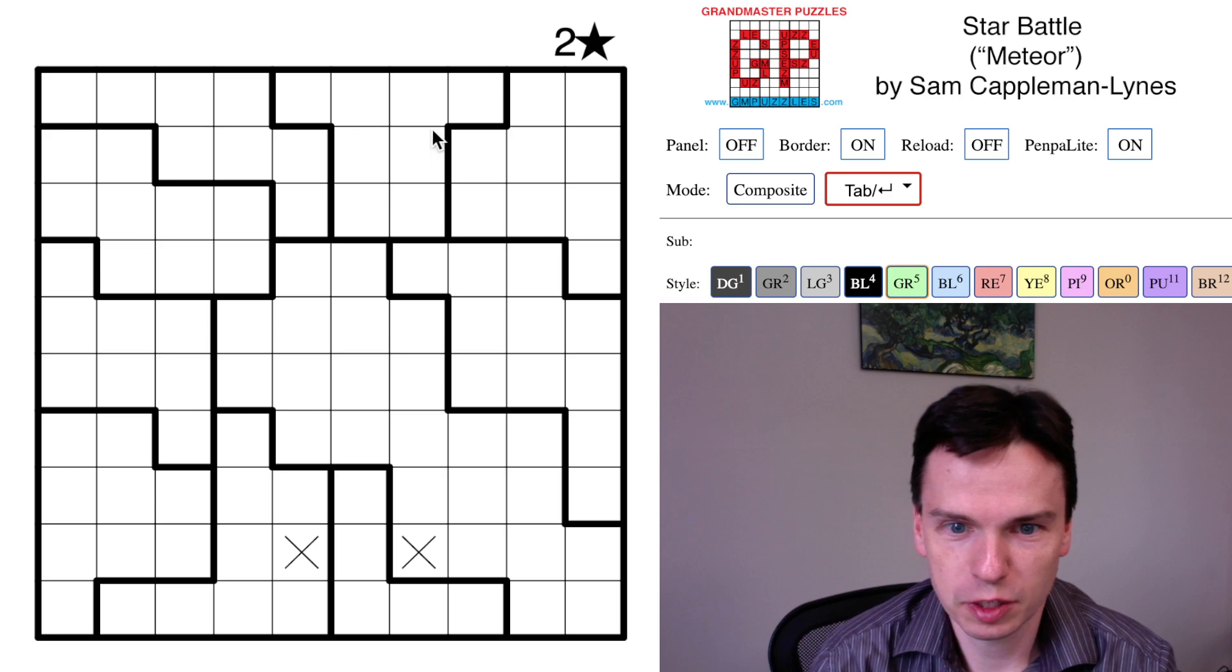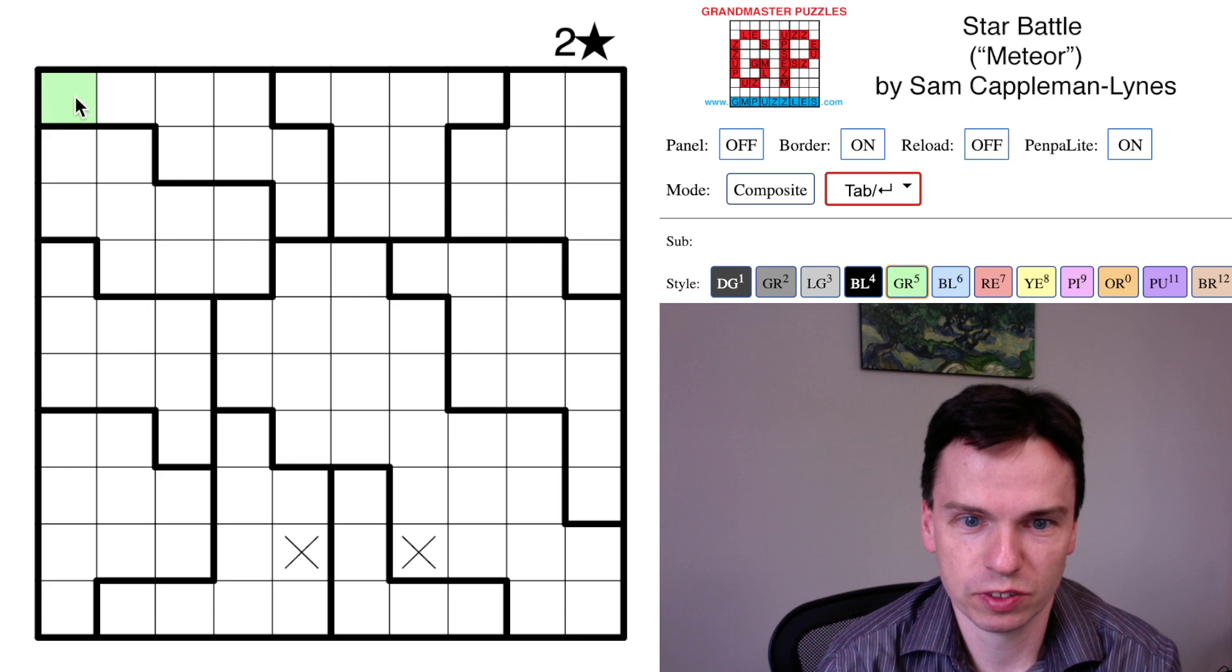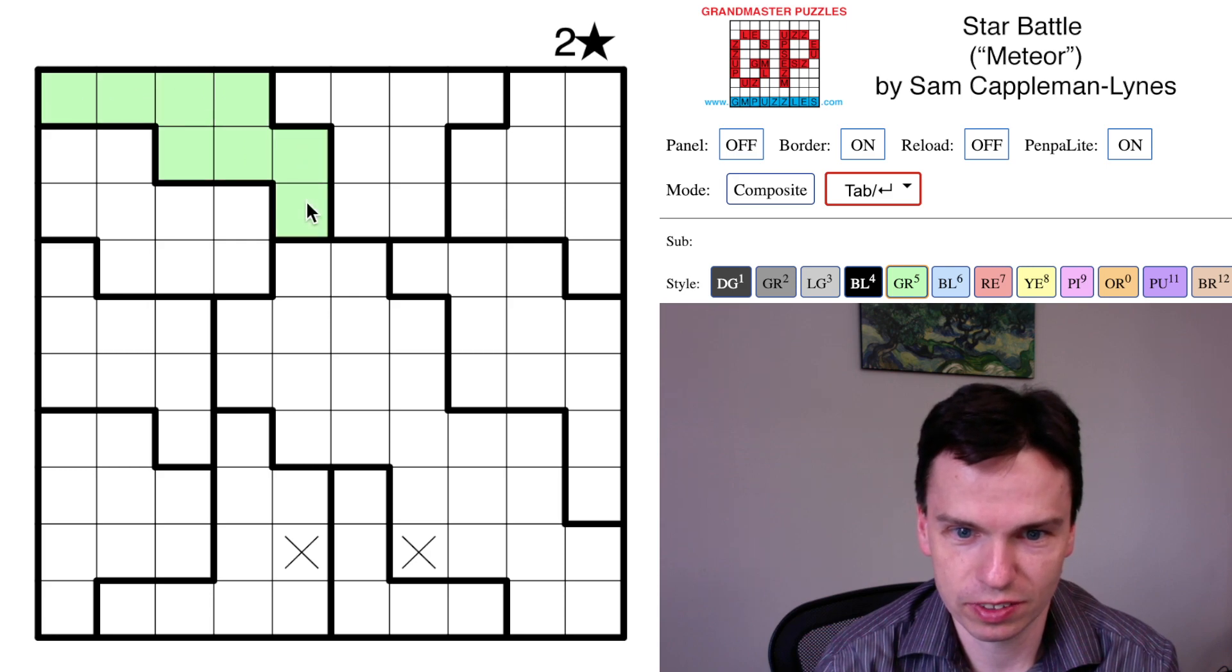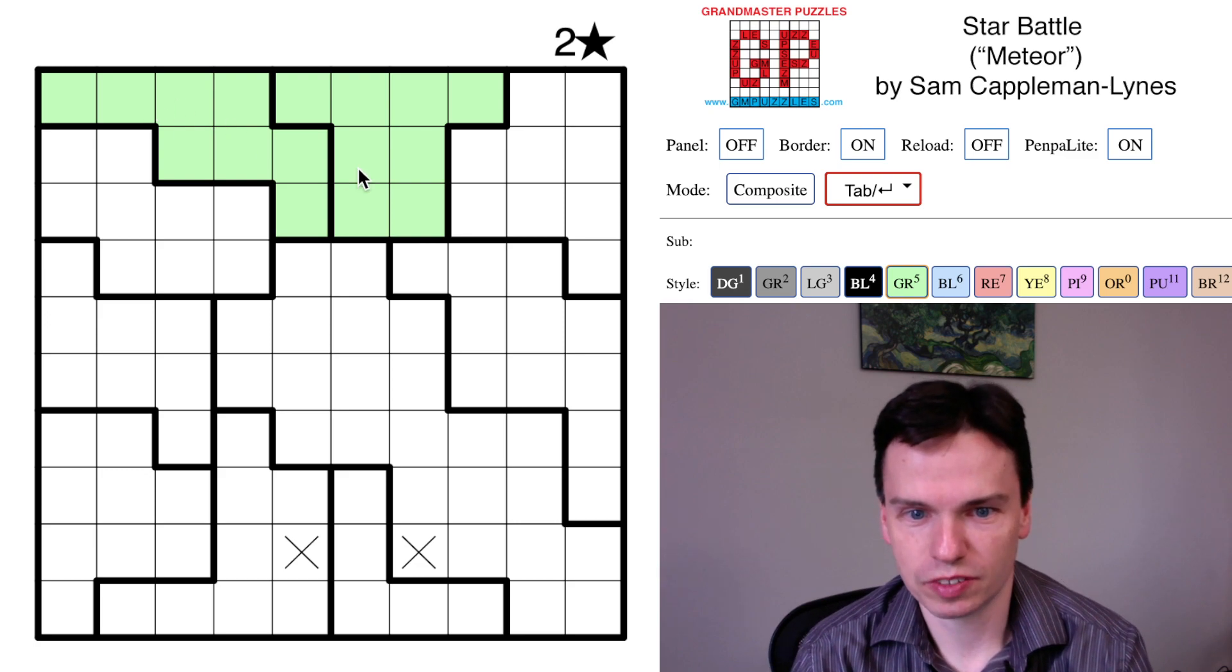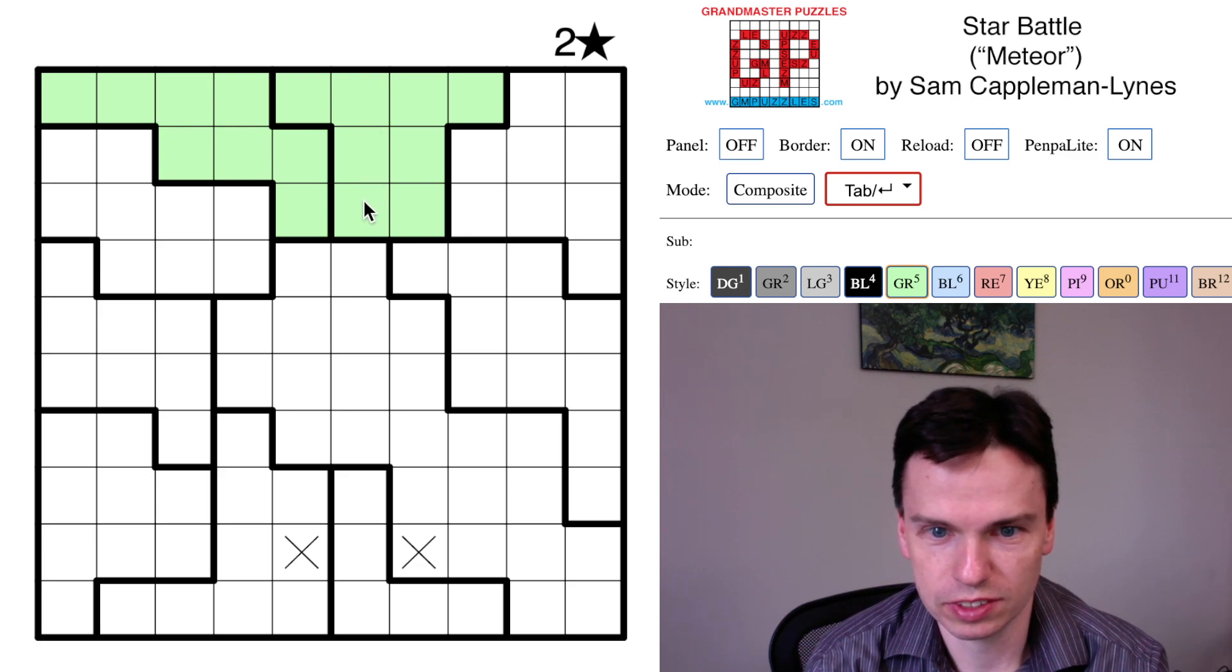One way to sometimes see these is to just recognize where you've got some pretty narrow regions. These two regions are all in the top three rows. They have three cells extra that go beyond them, and actually they're not super high tension.